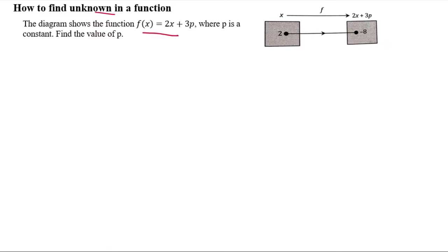So we have the function notation where f(x) equals 2x plus 3p. We know that if we put in 2, x is 2, we will get an answer of negative 8.